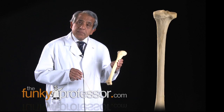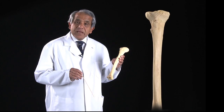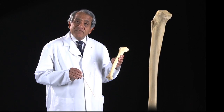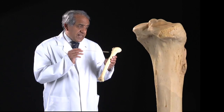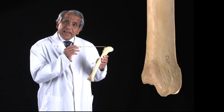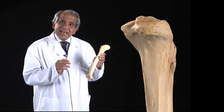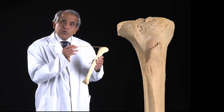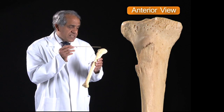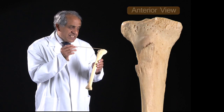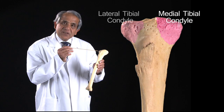Now let's look at the tibia in detail and identify some of its special and clinically important features. The tibia is expanded at either end, but the upper end is far more expanded than the lower end and in fact presents two shelf-like projections which are referred to as the condyles of the tibia — that is the medial tibial condyle and the lateral tibial condyle.